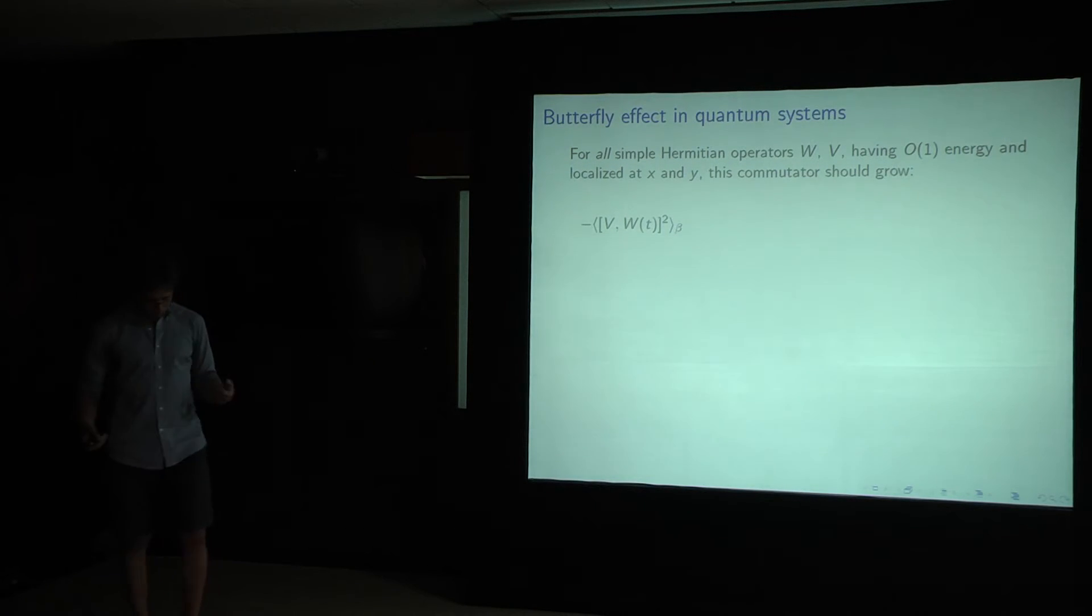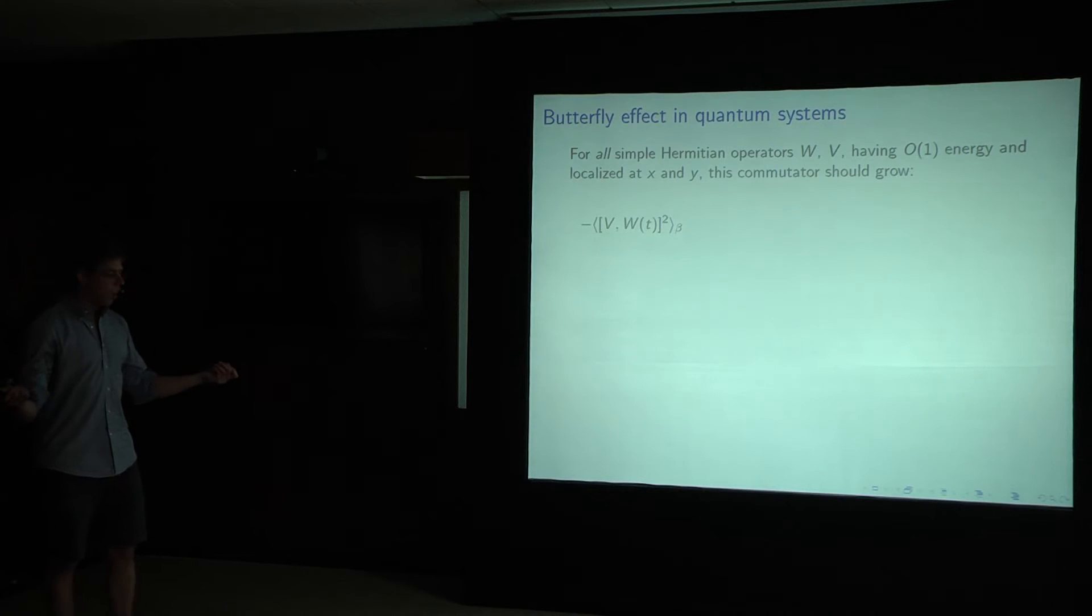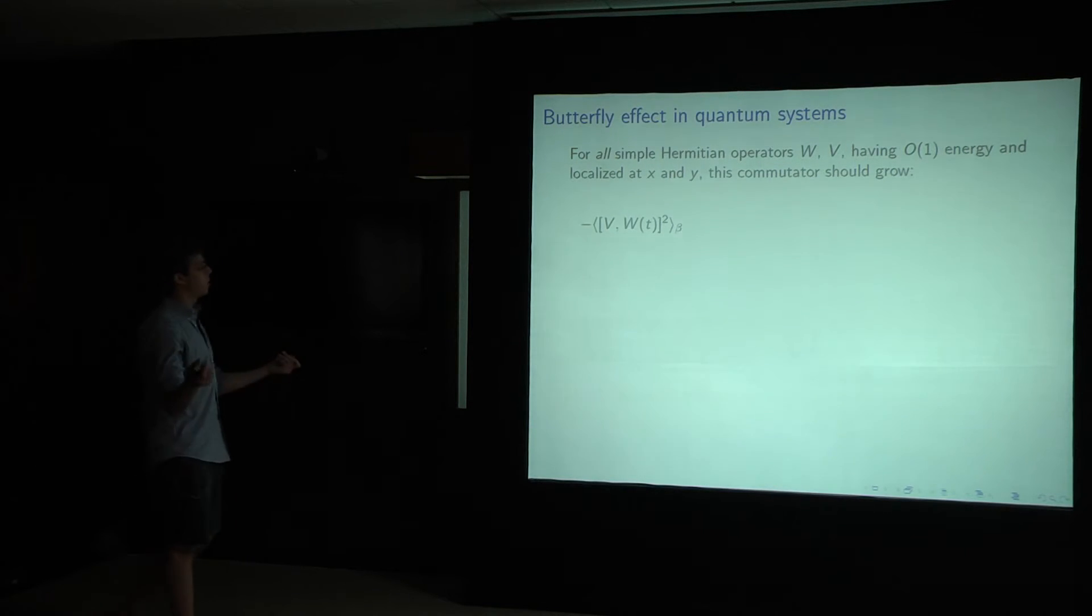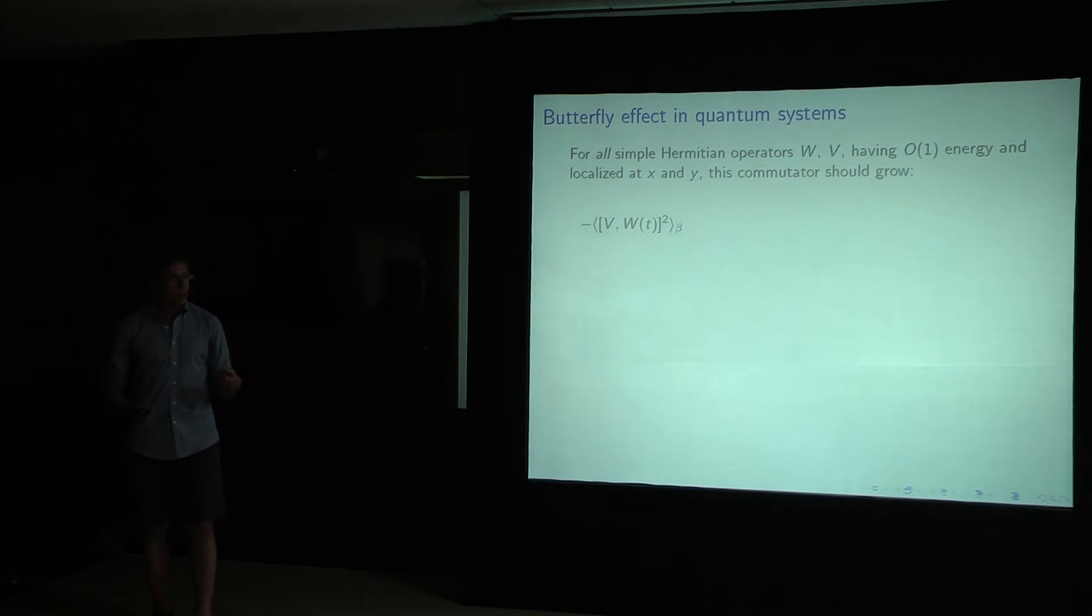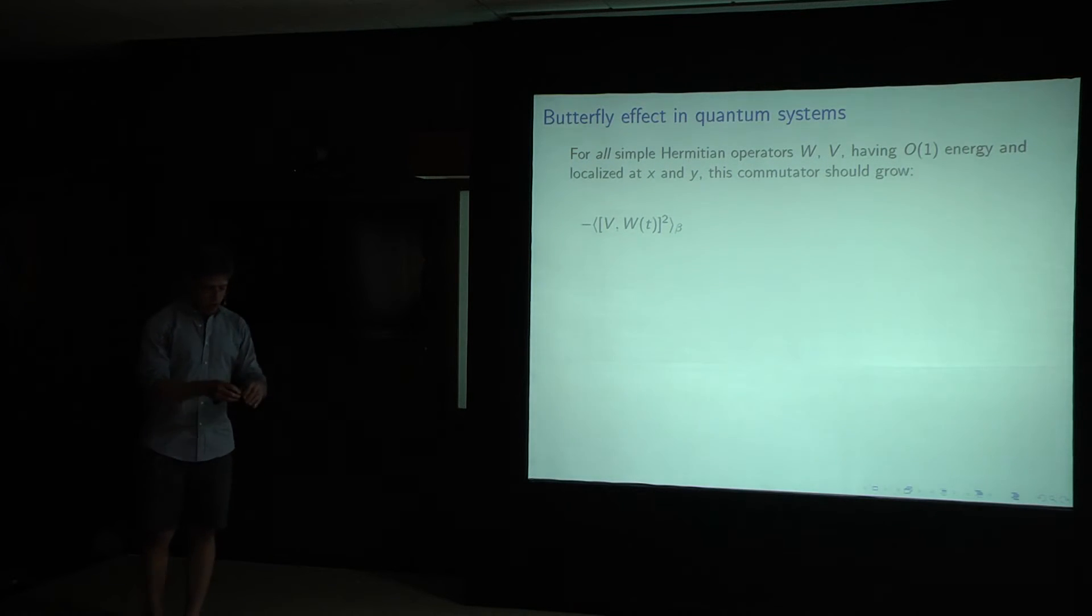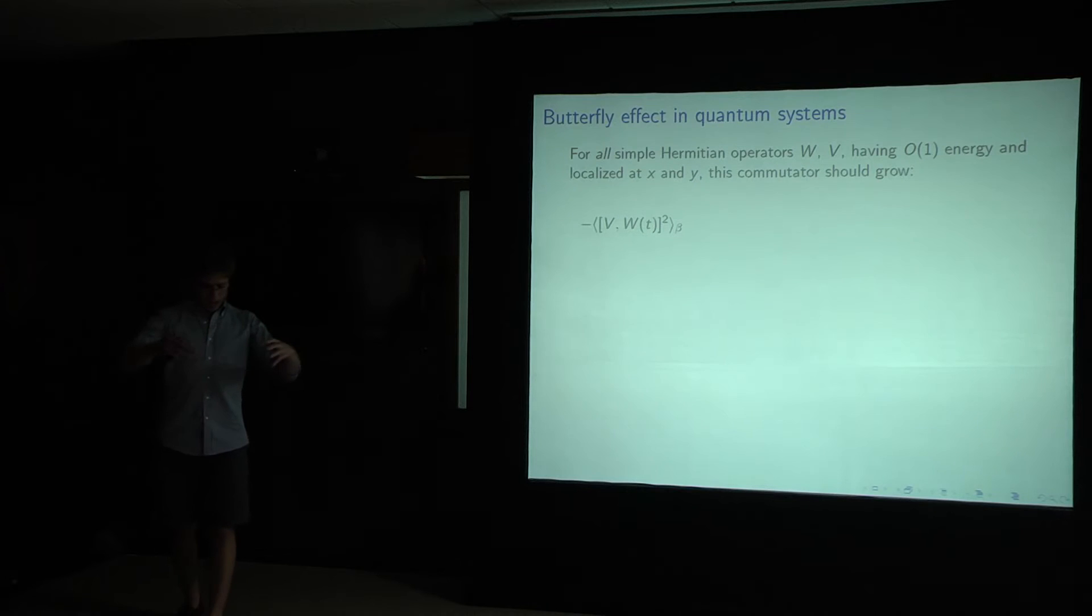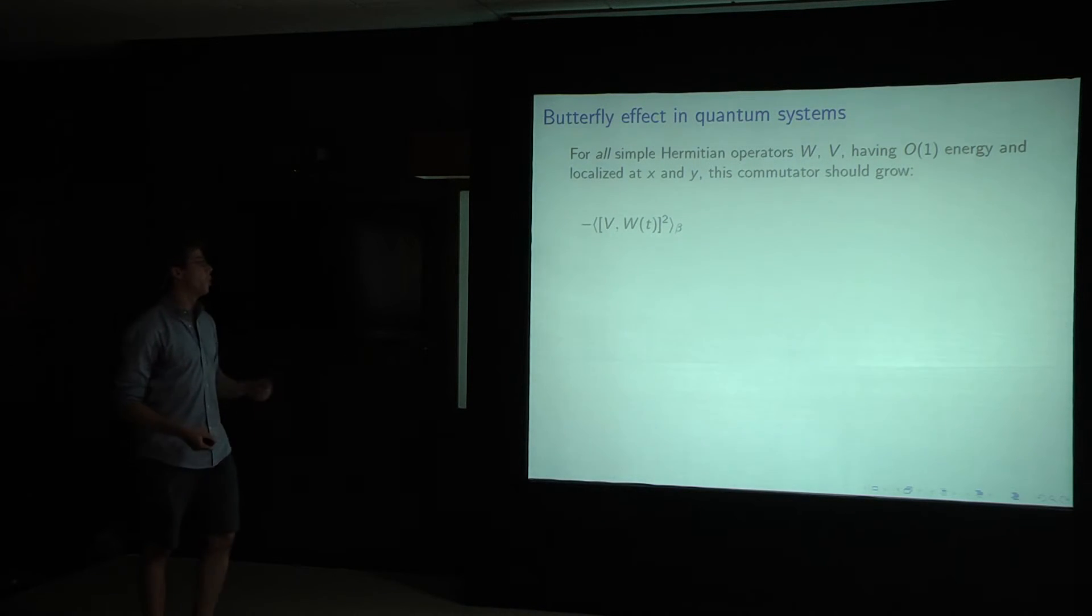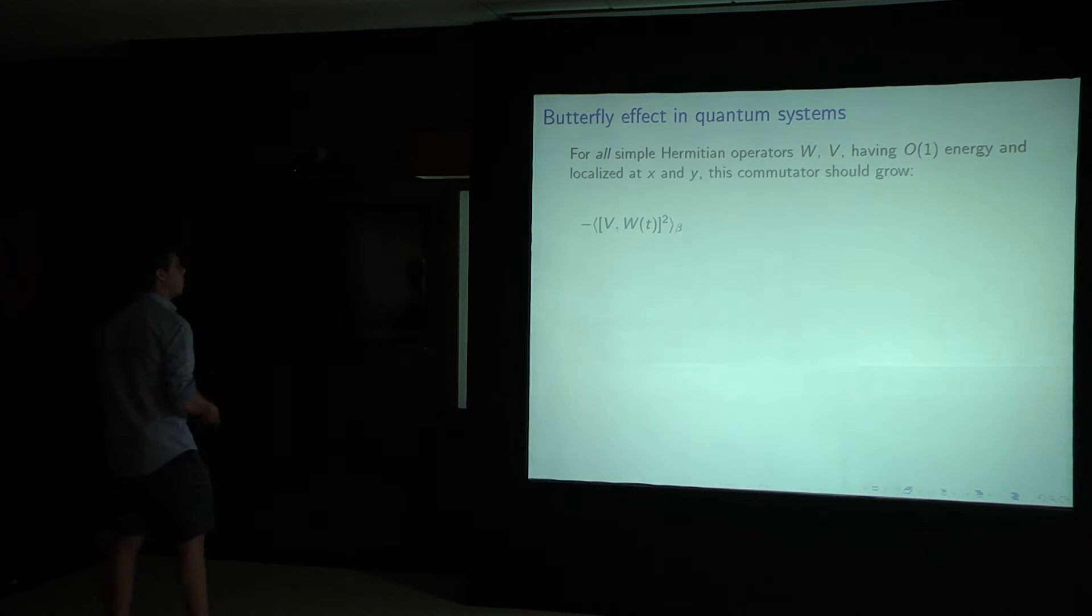Localized at X and Y respectively, this commutator should grow. At early times, they're apart. They're for relativistic system now. Let's talk about they're space-like separated. This will commute. And then eventually, we have this nice picture now of W expanding and growing outward. Eventually, it'll reach V, at which point they'll cease to commute. And that's a measure of the strength of the butterfly effect.